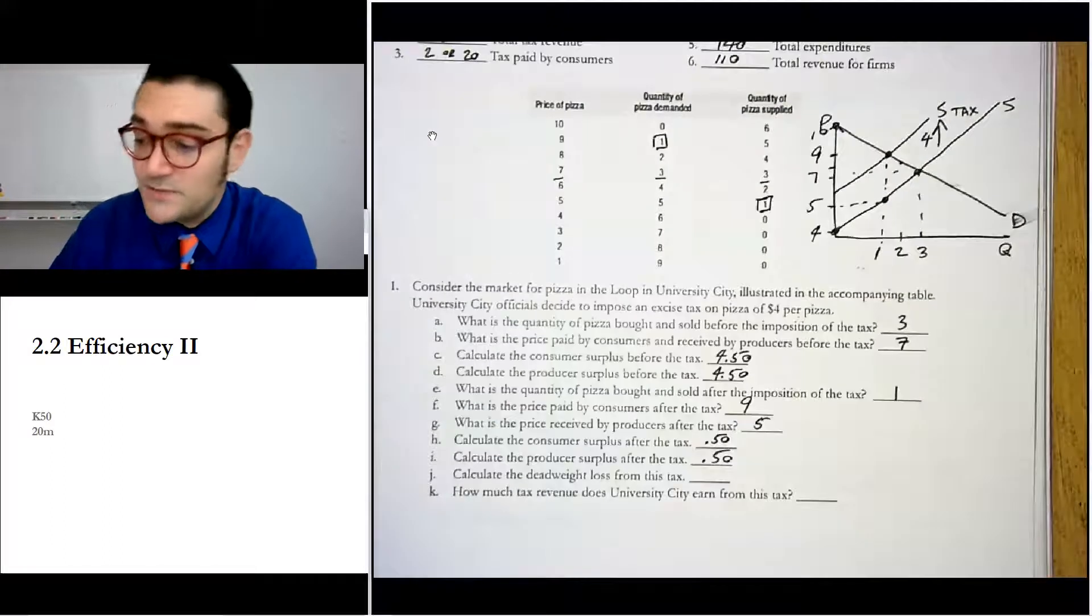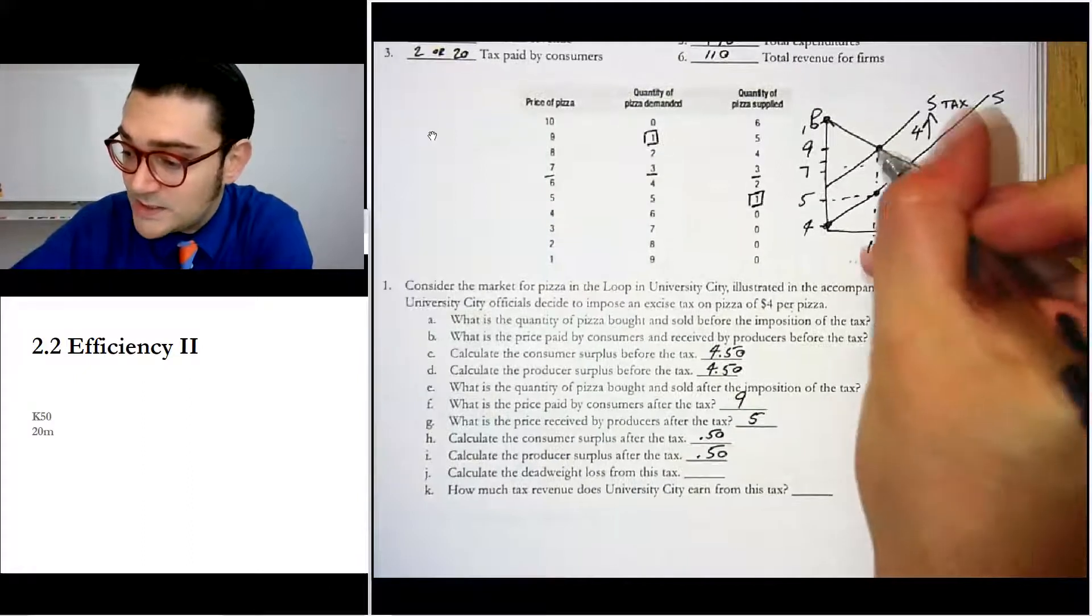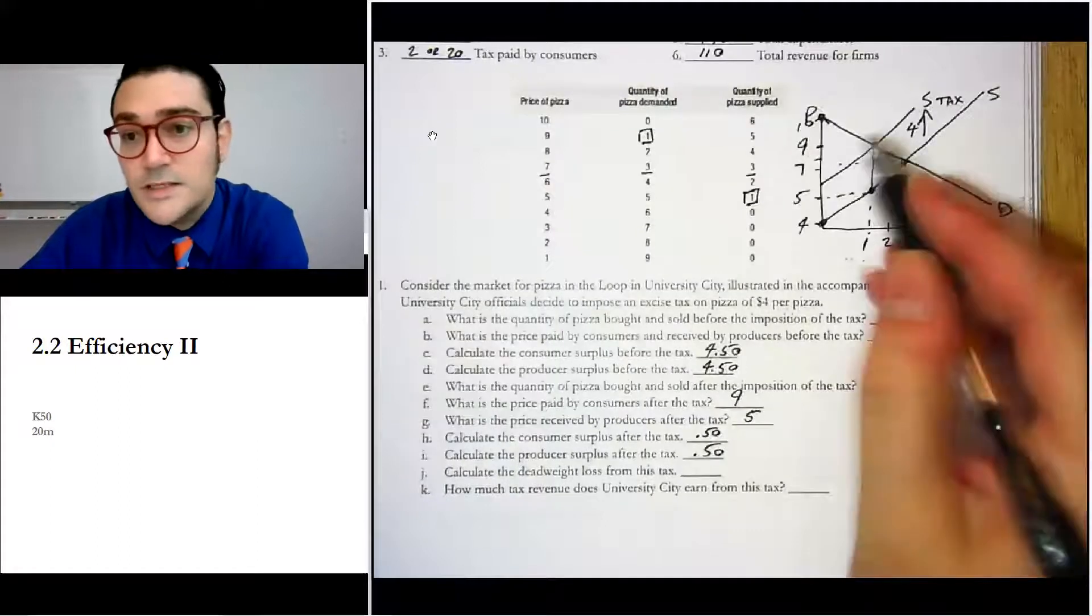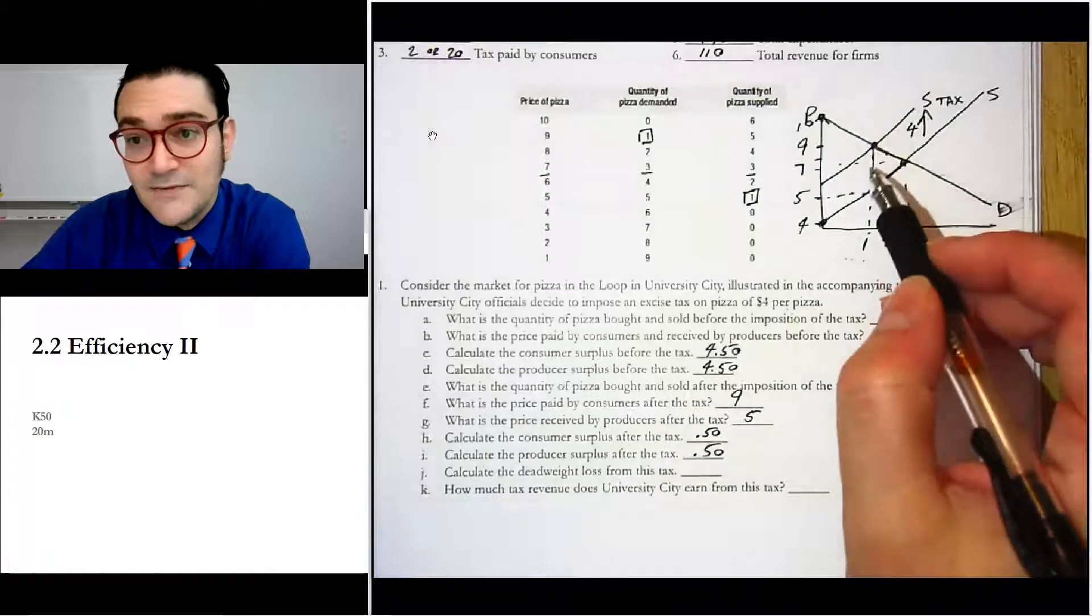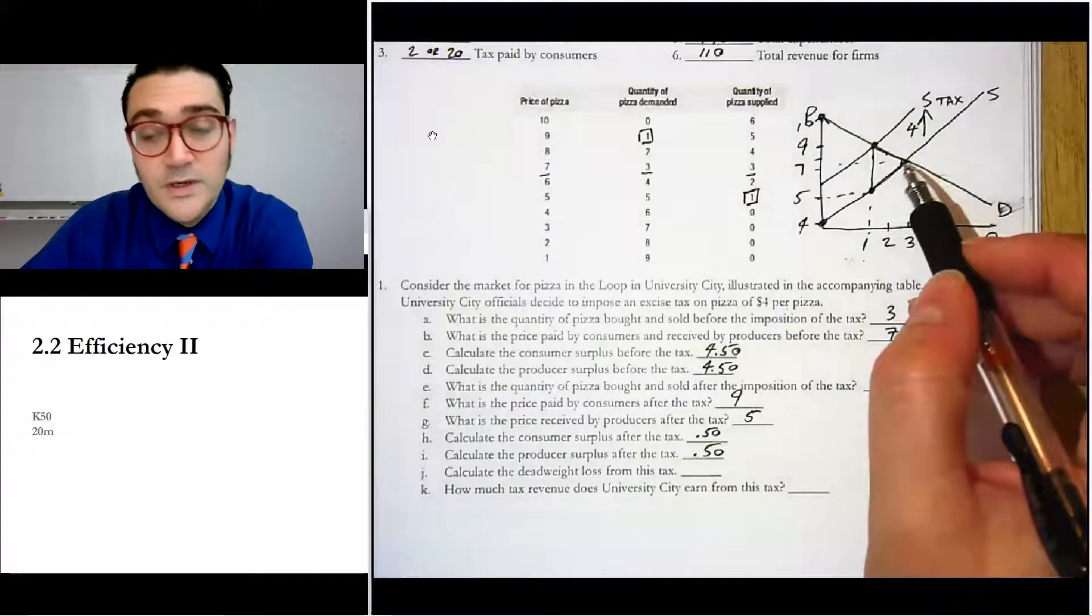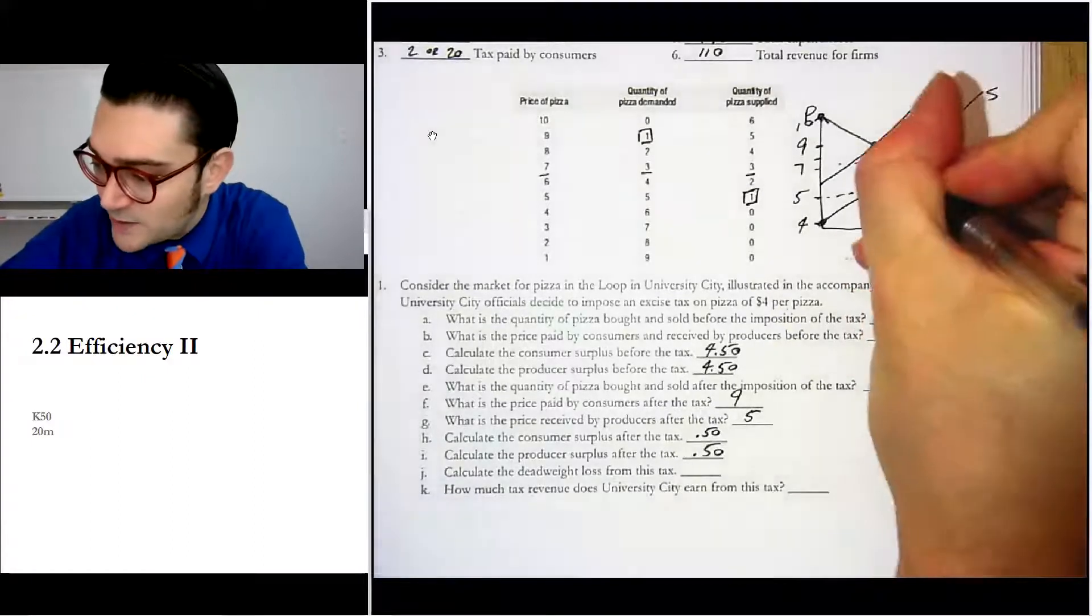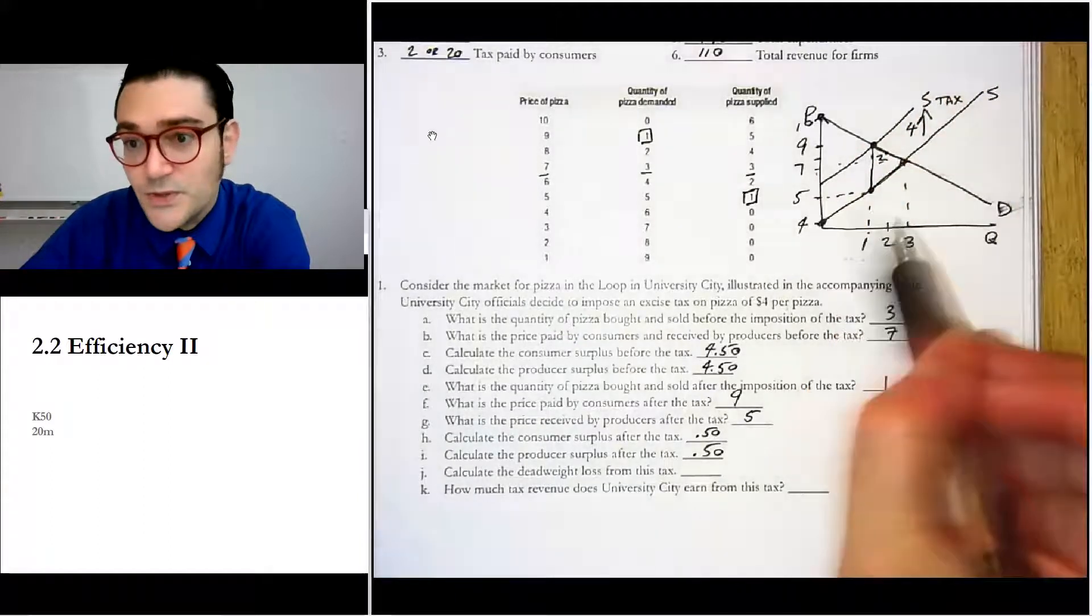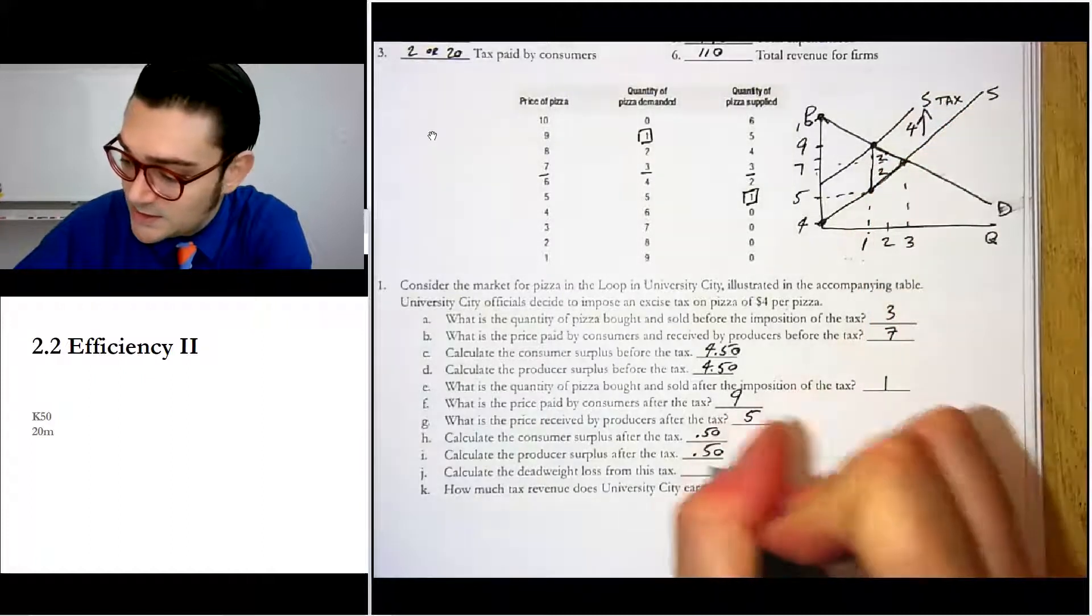And the deadweight loss on this one. Now think about it. We've got a couple of things going on here, but you can think it's this area of two triangles. And so we can say the height of one triangle is two. We go from nine to seven and then over is two for the base. So that's four divided by two is two. So the top half of this triangle is two. The bottom half of this triangle is seven to five is two and over is two. So that one's also two. So the total deadweight loss is four dollars.